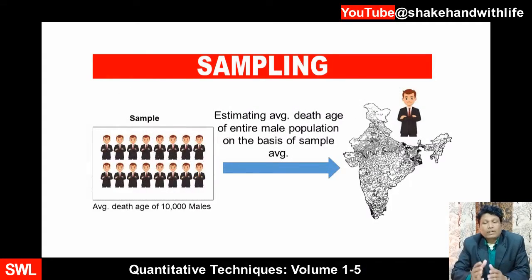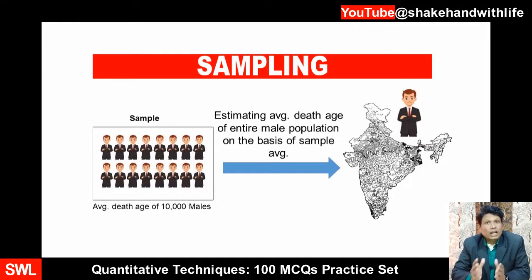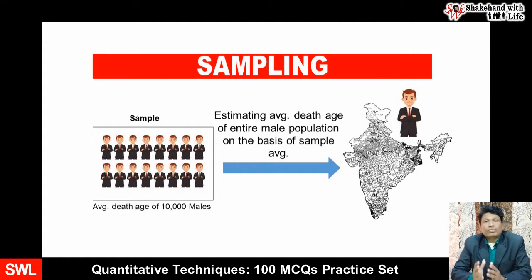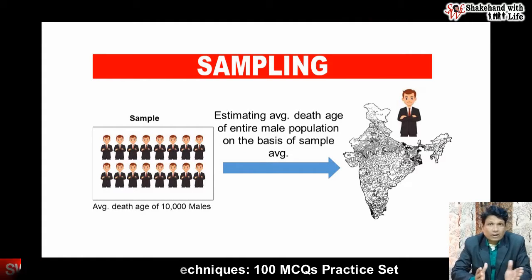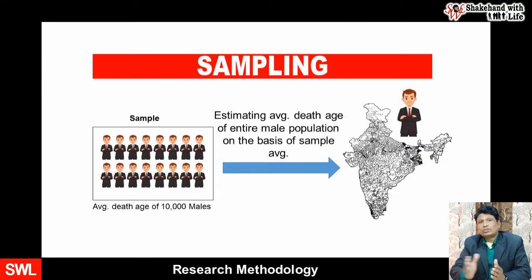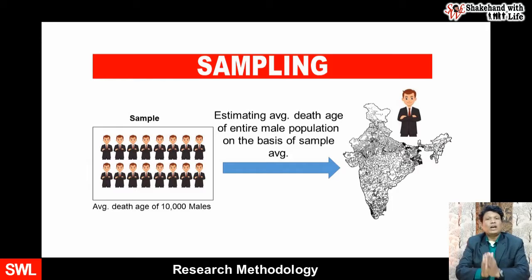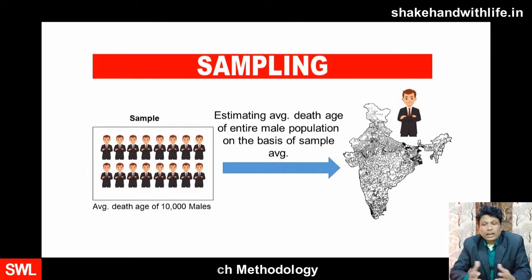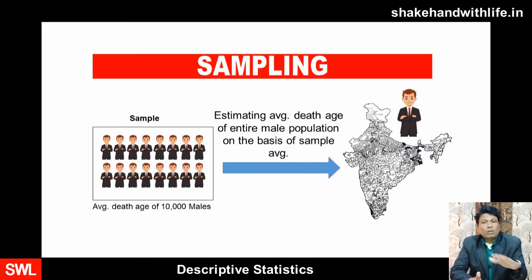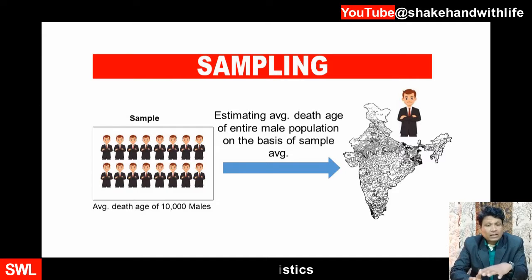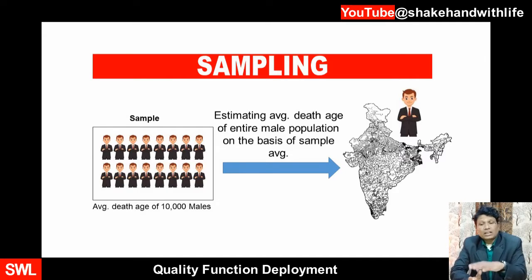For example, consider the average death age of the male population in India. If this is concluded on the basis of deaths of 10,000 males in a year selected from different parts of India, then this implies we are doing sampling and trying to estimate the average death age for the entire male population of India on the basis of the average death age of the sample of 10,000 males.